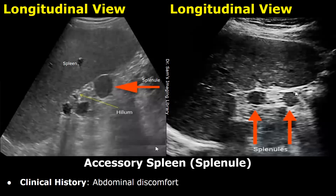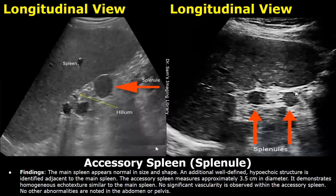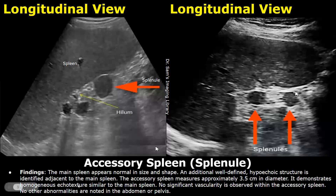The clinical history in this example is abdominal discomfort. These are the findings. The main spleen appears normal in size and shape. An additional well-defined hypoechoic structure is identified adjacent to the main spleen. Then the size of this accessory spleen is written. It demonstrates homogeneous echo texture similar to the main spleen. And there was no significant vascularity within the accessory spleen. No other abnormalities are noted elsewhere in the abdomen or pelvis.